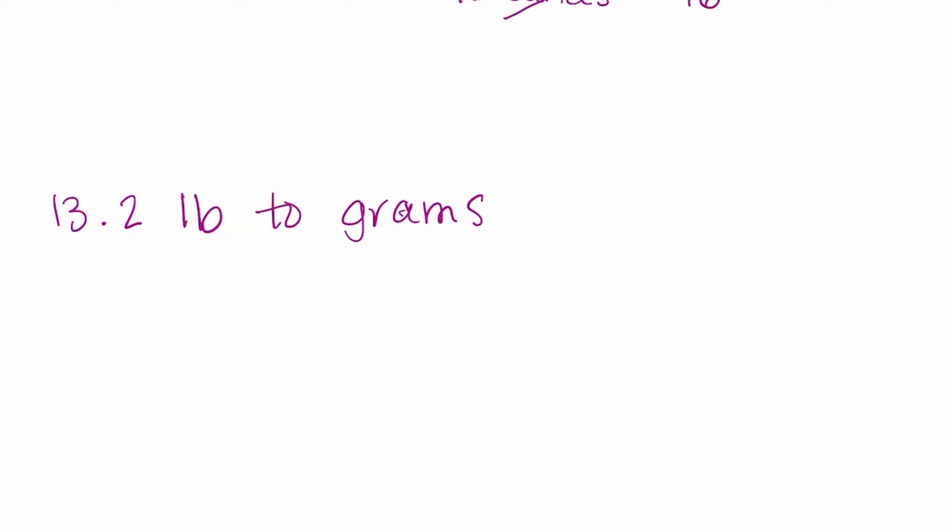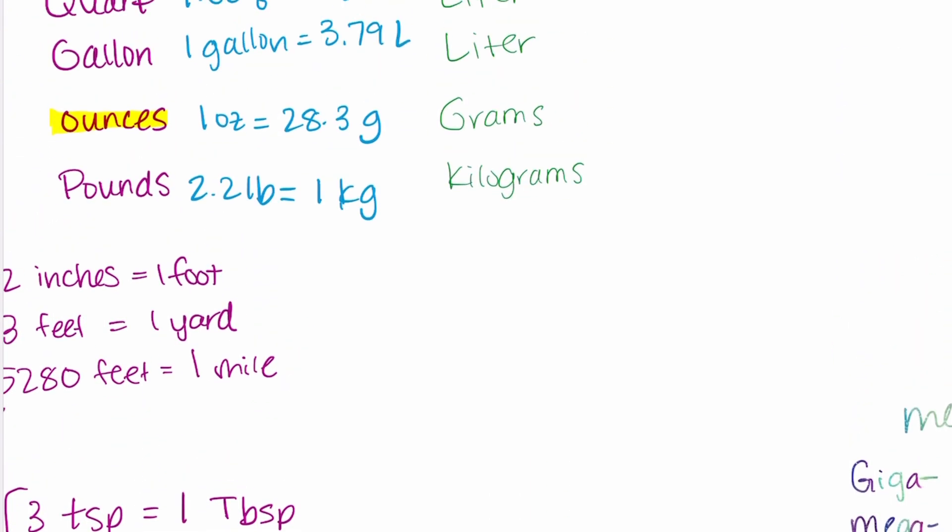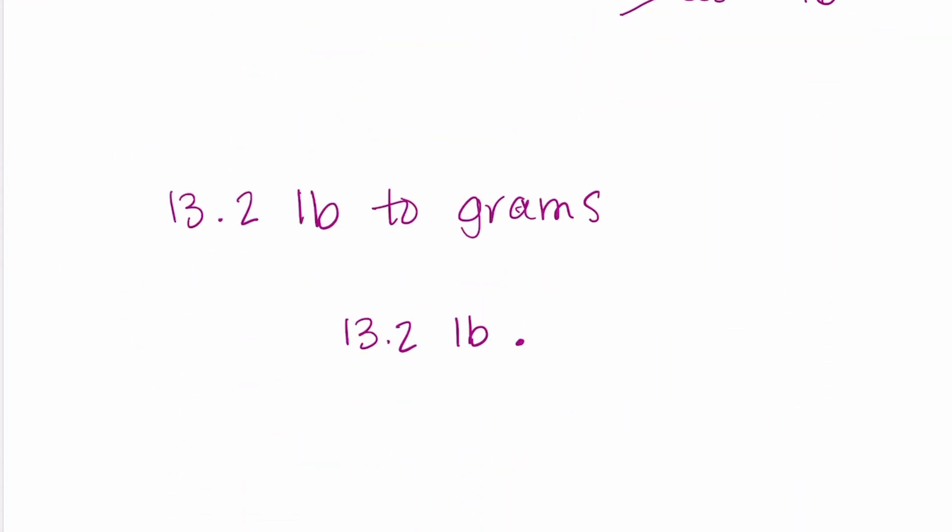Let's take a look at one more. Now here we want to convert 13.2 pounds into grams. So pounds is a standard measurement and grams is a metric measurement. So we're wanting to convert from standard to metric. And for this one, we actually need two different equivalents in order to get from pounds to grams. So first, we're going to use, let's look up here again at our conversion equivalents. So we know up here that 2.2 pounds is equal to one kilogram. So that's what we're first going to start with. 2.2 pounds is equal to one kilogram.